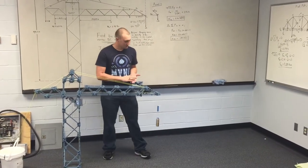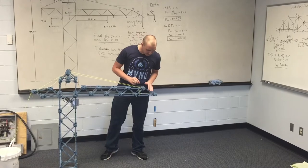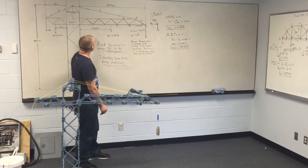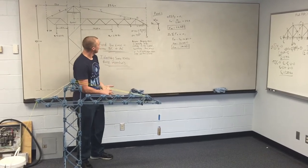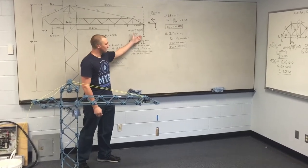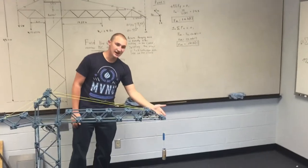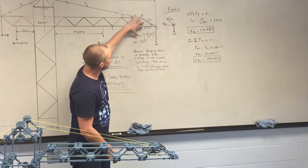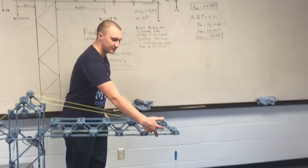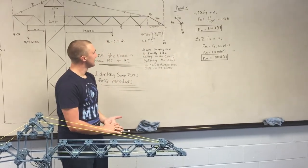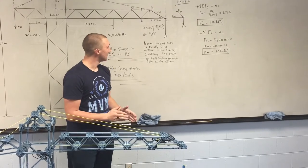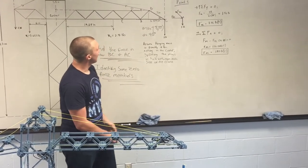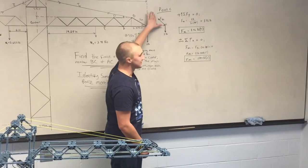We calculated the forces that would be in this member and this member. To do that, you can look up here. This is a diagram that we drew. You know that you have your force of two pounds pulling down on this endpoint, and that these two members must have reacting forces that will cause the total forces there to be zero.